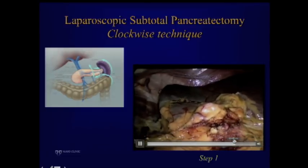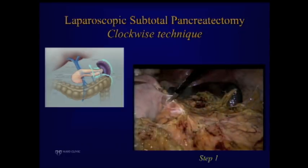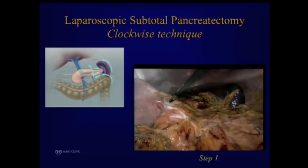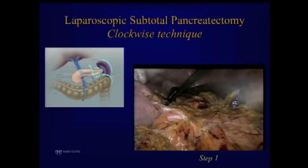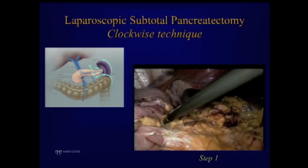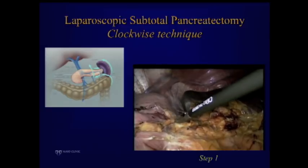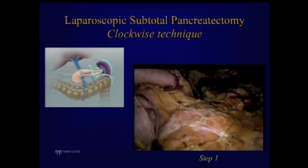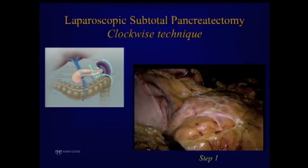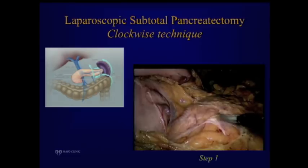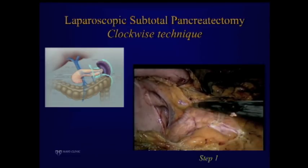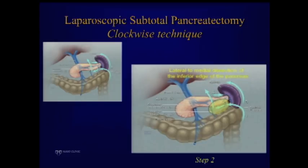Once in the lesser sac, you can continue going up to take down the short gastric vessels — and you see there's no retraction other than gravity. You take down the posterior attachment between the stomach and the pancreas. All of this is the pancreas already exposed — we haven't done anything to the pancreas other than mobilizing the colon. That's why I wanted to spend significant time showing this part. You can see the body and neck of the pancreas here with the whole exposure accomplished just by that.